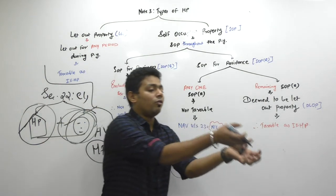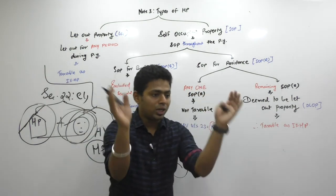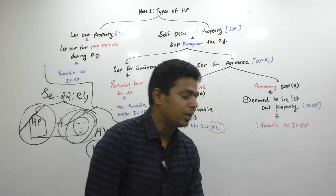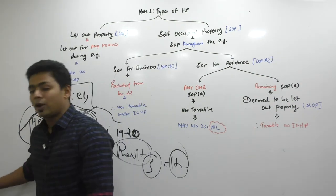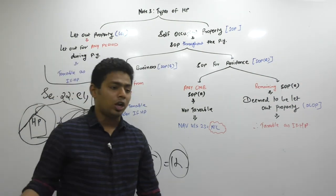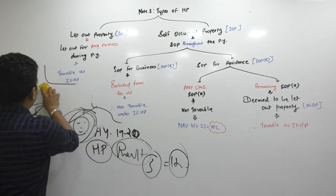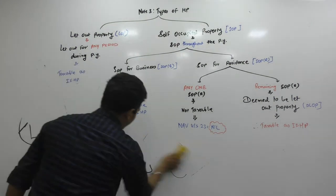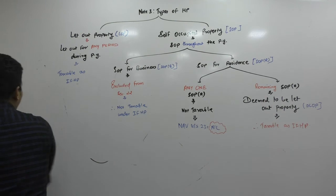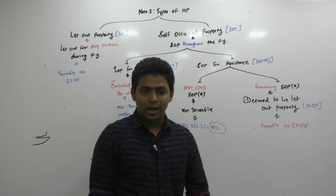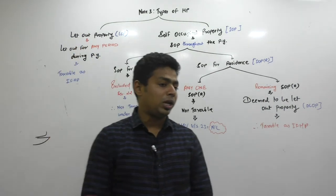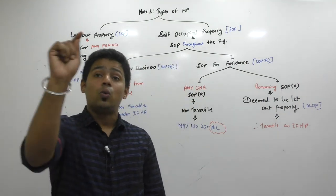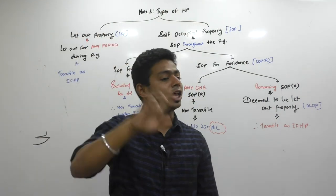The taxable value — gross annual value — the word is annual. So if your property becomes taxable, the whole annual value will become taxable; your actual period of let-out is not important. To understand that in more detail, we need to prepare a table. This table talks about the types of house property in our chapter. There are actually four types of property, but out of four, only three are taxable under this head. One property will go to its own head, which is PGBP.